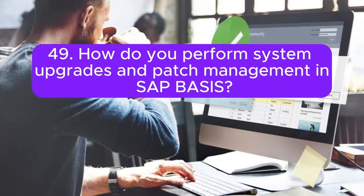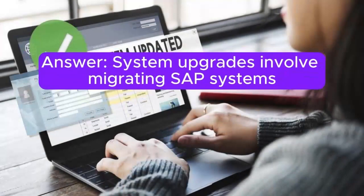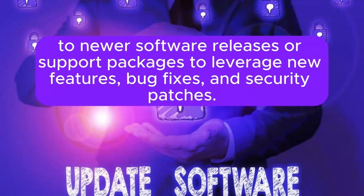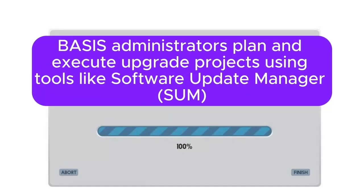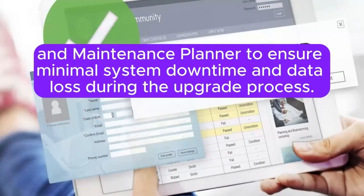Question 49: How do you perform system upgrades and patch management in SAP BASIS? System upgrades involve migrating SAP systems to newer software releases or support packages to leverage new features, bug fixes, and security patches. BASIS administrators plan and execute upgrade projects using tools like Software Update Manager (SUM) and Maintenance Planner to ensure minimal system downtime and data loss during the upgrade process.